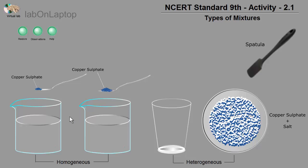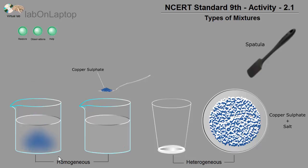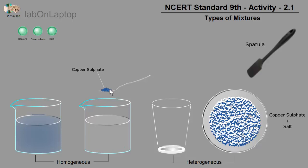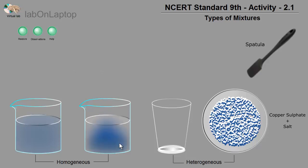The first thing we have is copper sulfate. We are trying to put the copper sulfate in water — we click the spoon on it and mix it. Then the copper sulfate is being mixed with water. Now we have the second one, with double the amount of copper sulfate, and we put that in water as well.